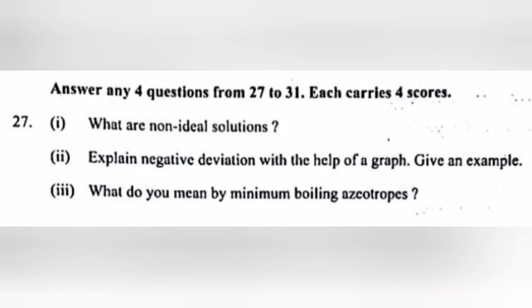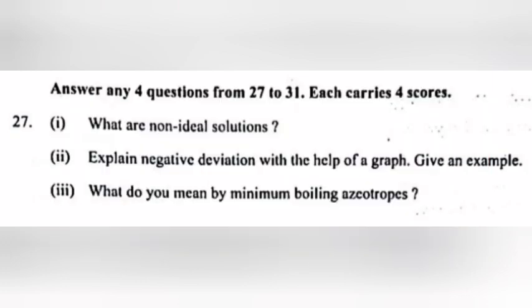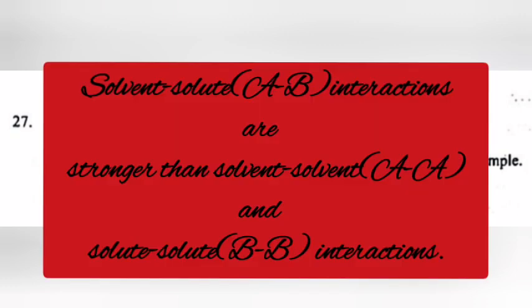Question 27, Part 1: What are non-ideal solutions? Answer: Solutions which do not obey Raoult's law for all concentration and temperature ranges. Part 2: Explain negative deviation with the help of a graph. Give an example.